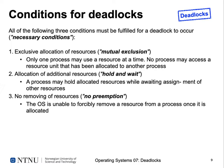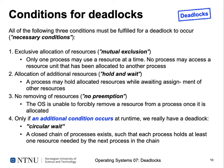Having these three conditions doesn't necessarily mean we have a deadlock. For a deadlock to actually occur, we need a fourth condition at runtime: circular waiting. This means a closed chain of processes exists where each process holds at least one resource needed by the next process in the chain.